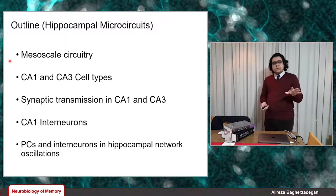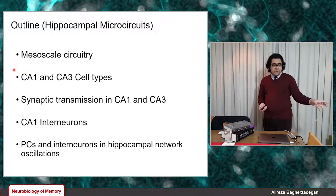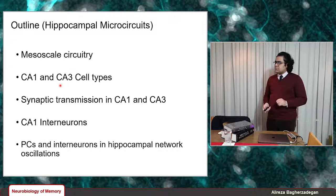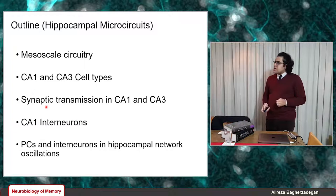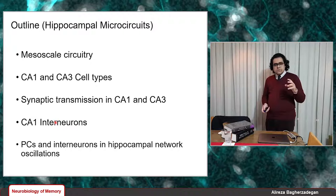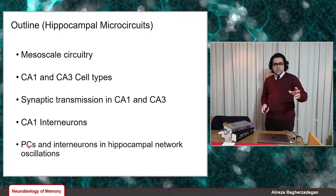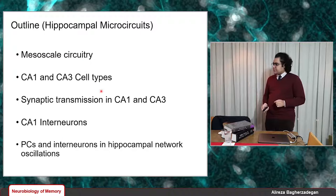This is the outline for this lecture on the hippocampal microcircuits. First, I want to review the mesoscale synaptic circuitry of the hippocampal formation from previous lectures. After that, I'm going to introduce some common cell types identified in CA3 and CA1 microcircuits, then talk about synaptic transmission in CA1 and CA3, then interneuron properties in CA1, and finally the interactions between pyramidal cells and interneurons and how they produce network oscillations in hippocampal microcircuits.